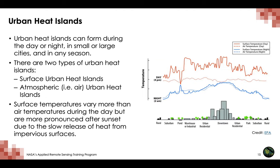Urban heat islands can form under a variety of conditions, including during the day or night, in small or large cities, in suburban areas, in northern or southern climates, and in any season. There are two types of urban heat islands. The first is the surface urban heat island, which can be observed through satellite remote sensing. The second is atmospheric, or air, urban heat island.